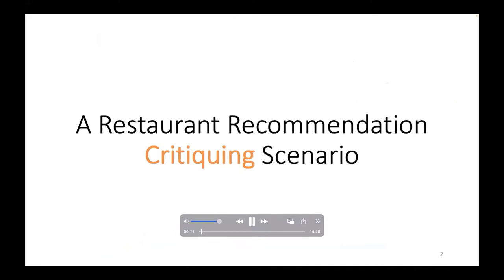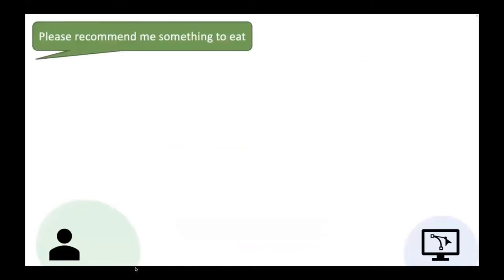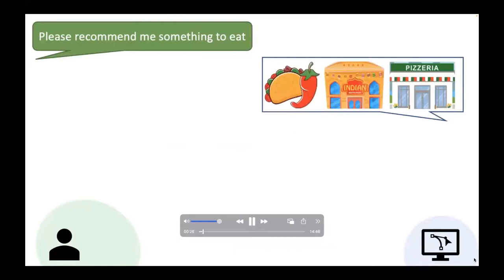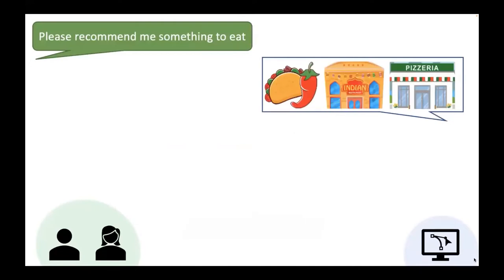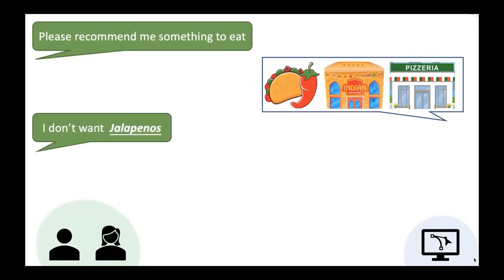Let's start with a quick example of a restaurant recommendation critiquing scenario. This recommendation involves the user and an assistant. The interaction starts with the user asking for restaurant recommendations. The system then recommends a list of restaurants based on the user's historical preferences. But there are scenarios where the user is accompanied by his girlfriend or wife who doesn't like spicy food. So after seeing the top recommendations, the user provides critiquing feedback indicating that they don't want jalapenos in their food options.